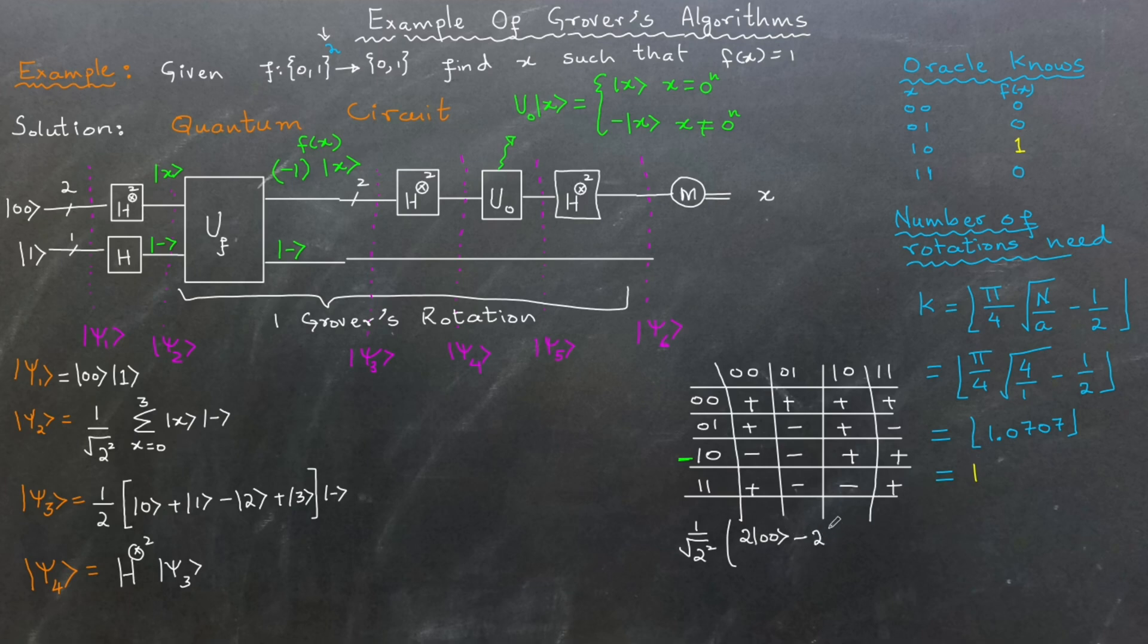We also apply a normalization factor which in this case is 1/2. This normalization ensures that quantum states remain valid.